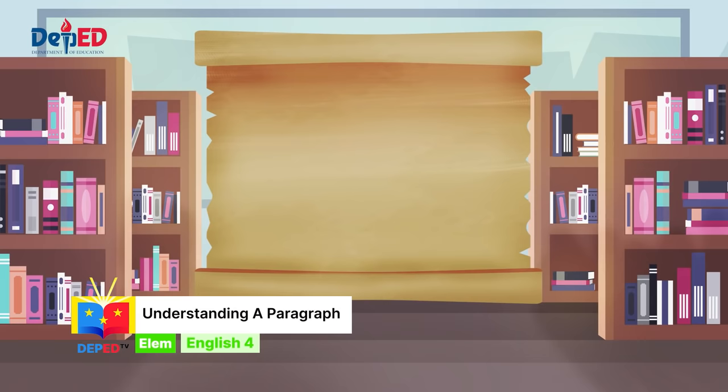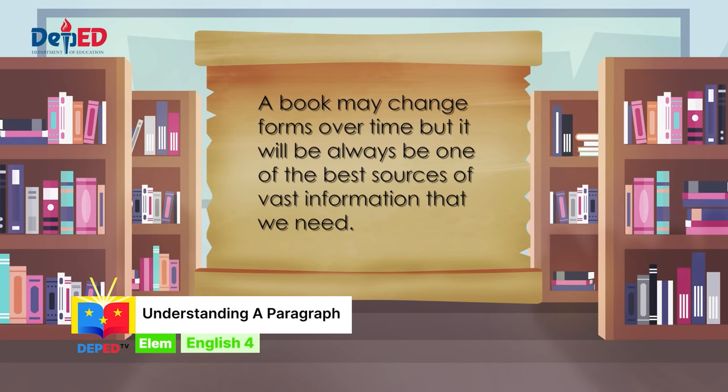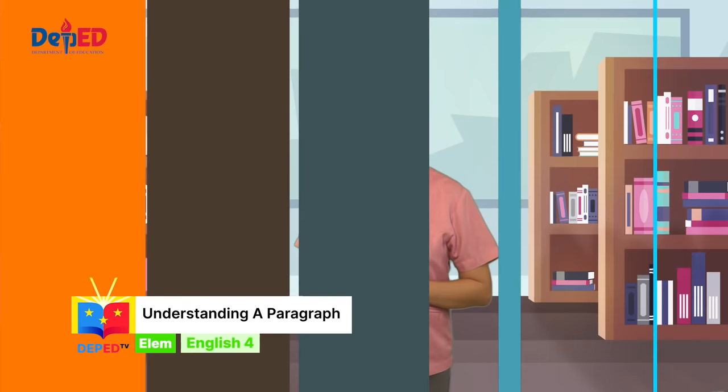Today, books can also be in electronic form, or e-book. It is the most convenient type of book, and as long as you have a gadget, you can read anywhere and anytime you want. A book may change forms over time, but it will always be one of the best sources of vast information that we need.